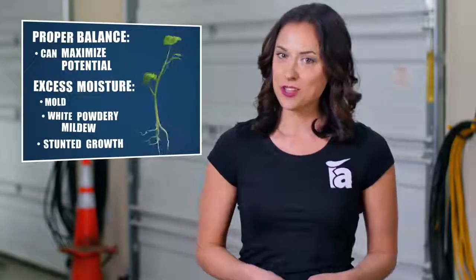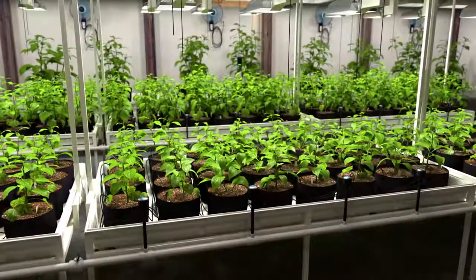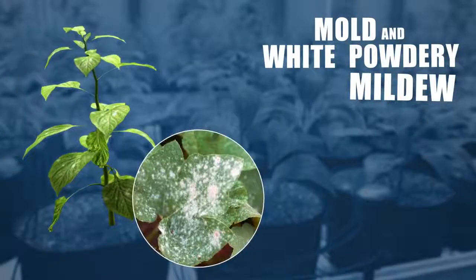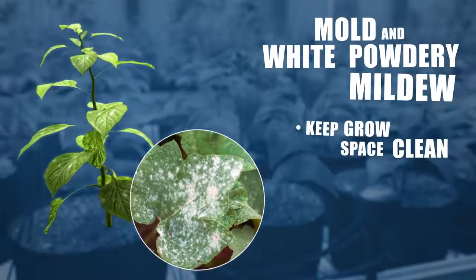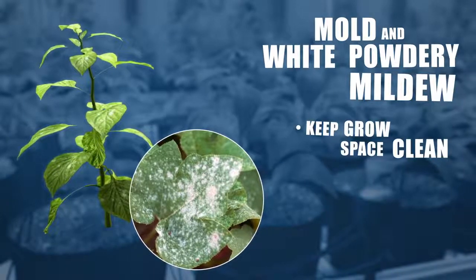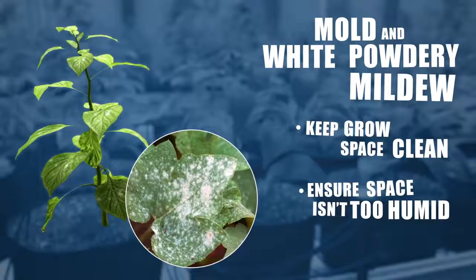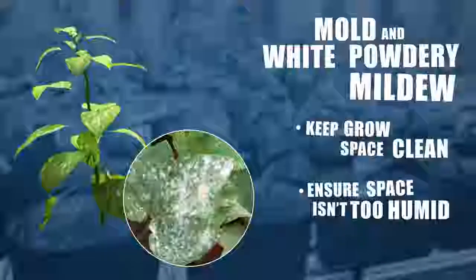That's why controlling humidity is so important. Molds and white powdery mildew can wreak havoc on your plants, so keep your grow space clean to minimize the spread of any spores. It's also critical to make sure your space isn't too humid, creating an environment in which mold and mildew thrive. Once mold or mildew take hold, they can spread quickly and ruin your crop.